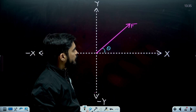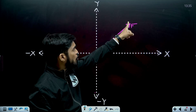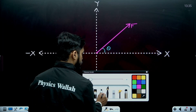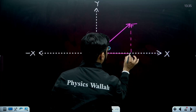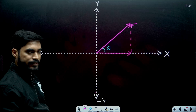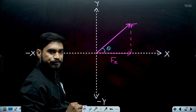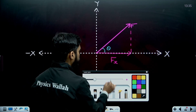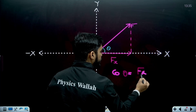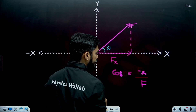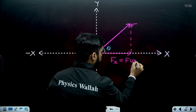Let's find the x-component first. I will find the projection, or the shadow, of this force on the x-axis. This shadow will be the x-component of the force. If you look at this triangle, cos θ equals Fx divided by F. So Fx equals F cos θ.